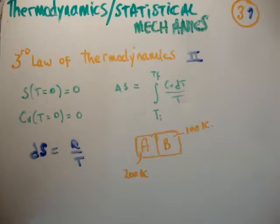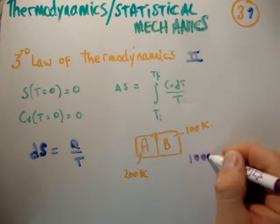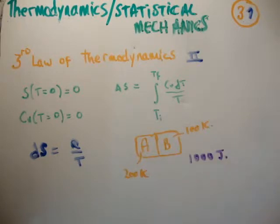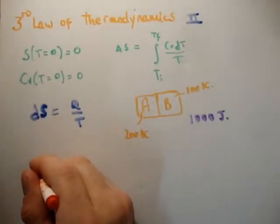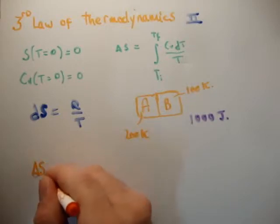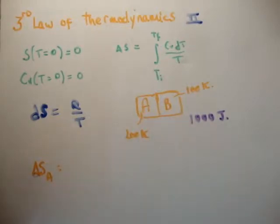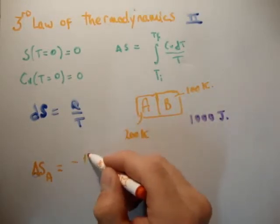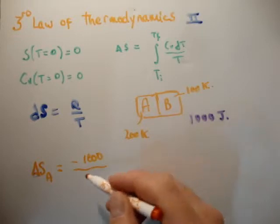So let's look at the entropy. So let's say, for example, that in total, 1,000 joules flows. Therefore, dS is going to be the following. We're going to get that delta S for the first body is going to be equal to minus 1,000 divided by 200.